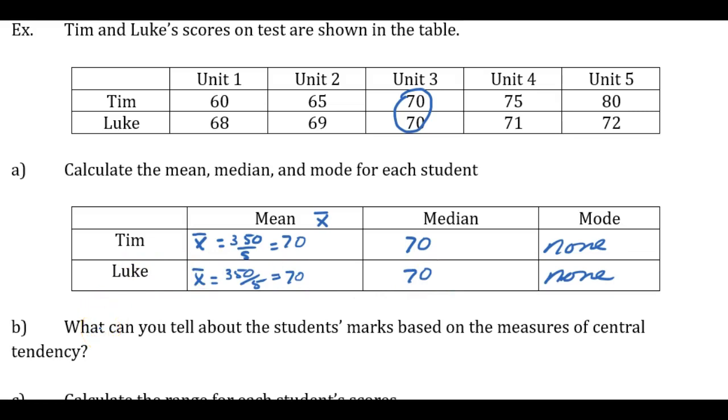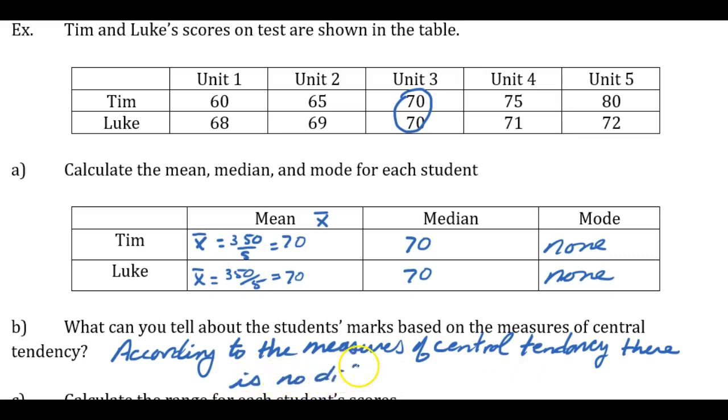So what can you tell about students' marks based upon the measures of central tendency? Really can't tell much difference. So according to the measures of central tendency, there's no difference. Marks look identical. You really can't tell much information about this.